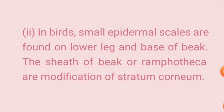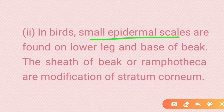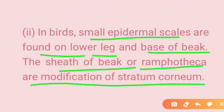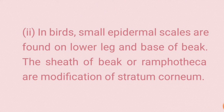In birds, small epidermal scales are found on the lower leg and at the base of the beak. The sheath of the beak, called the rhamphotheca, is a modification of the stratum corneum.